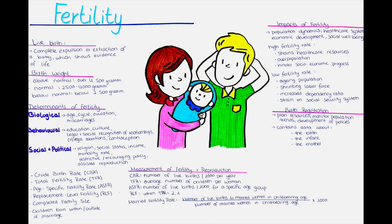These determinants can vary across individuals, societies, and regions, and understanding them is crucial for analyzing and predicting fertility patterns and trends. We divide determinants of fertility into different groups: biological, behavioral, social, political, and health determinants.